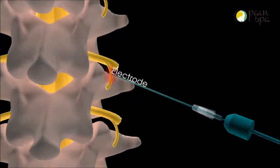Finally, the electrode is heated to stun the nerve and thereby preventing it from transmitting painful signals to the brain.